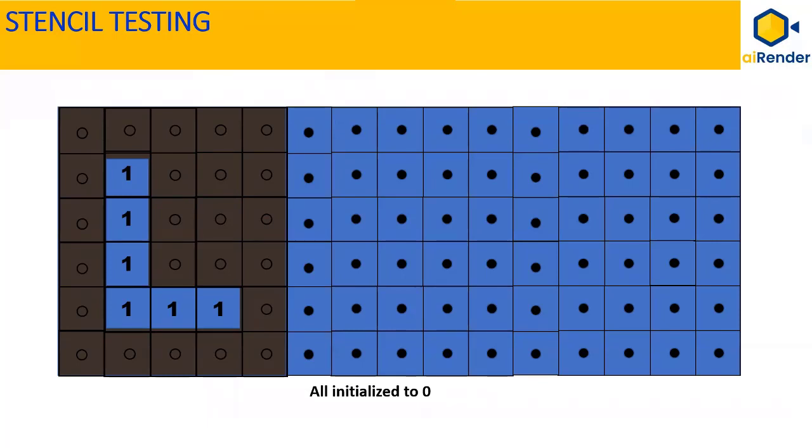At the same time, the stencil buffer locations mapping to the brown box covering the stencil mask for letter L are all set to a value of 0, which indicates the mask will be occluding or covering the background region. That's pretty much the world of stencil testing.